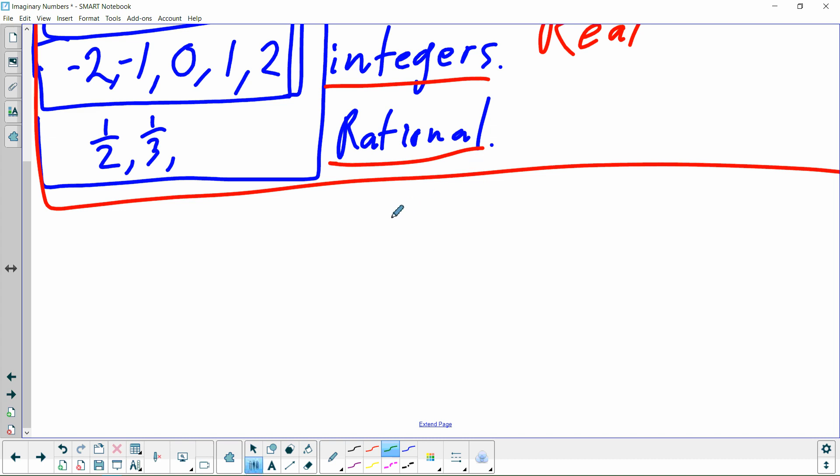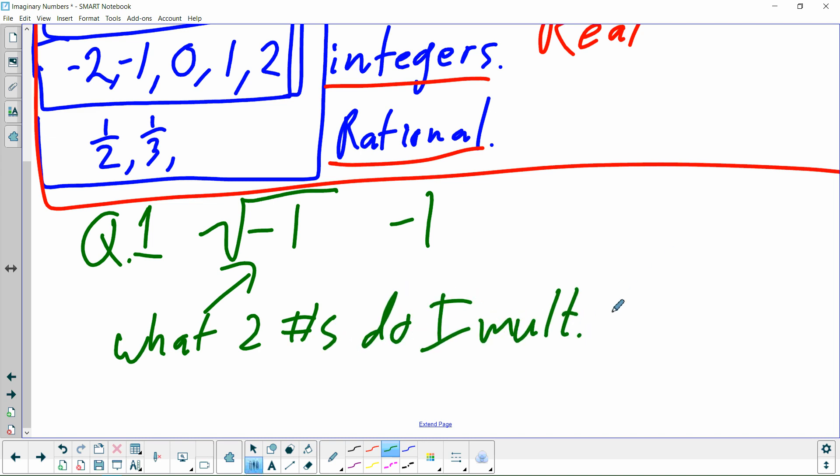The question, here's question number one on your homework. What is the square root of negative one? And when you try and do this, most kids say, well, it's negative one. And what we mean by square root is what two numbers do I multiply to get that number? To get that number. What two numbers can I multiply together? And it has to be a repeat number. What number can I multiply to itself? This is worded poorly. What number can I multiply to itself to get negative one?